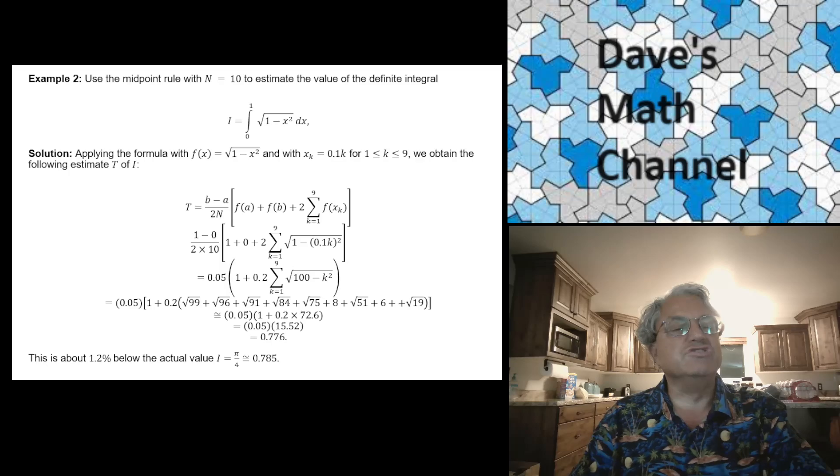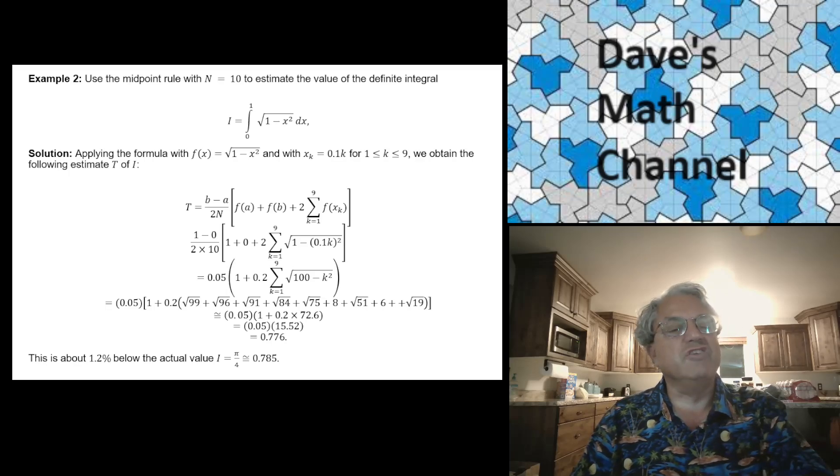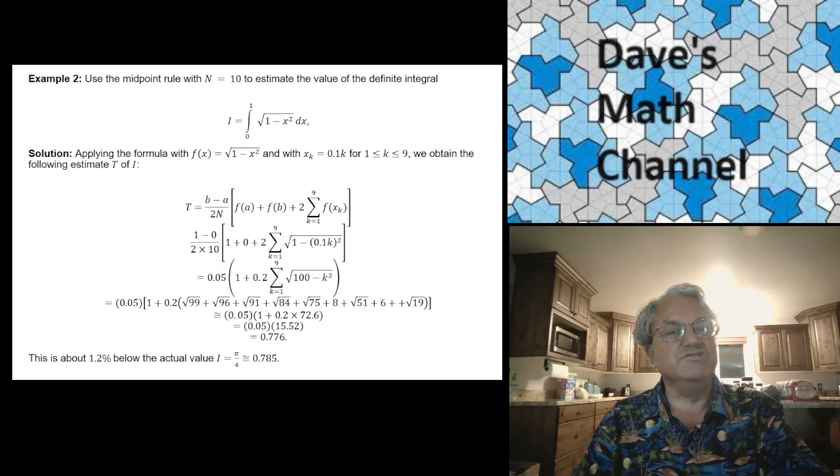But let's just do this particular example. So when we apply the formula again, and the top line I just wrote down the formula again, and when you plug in the values, plug in the numbers, this is a little messier calculation because we're working with square roots, so you have to add a bunch of square roots. But when you're done with all this, what you'll find is you get an answer that's about 0.776. And that turns out to be pretty close to the correct answer. It's about 1.2% too small. You get a not bad estimate of pi over 4.